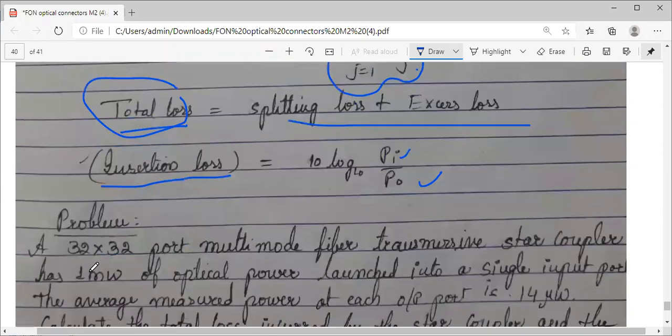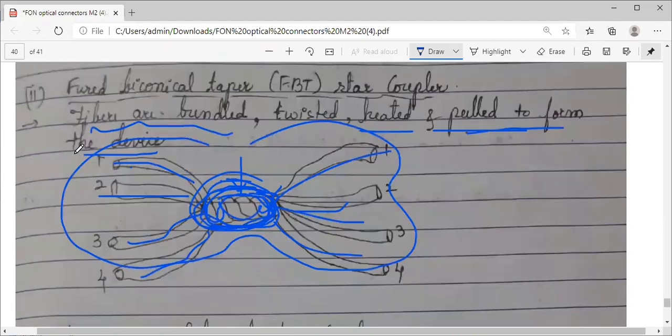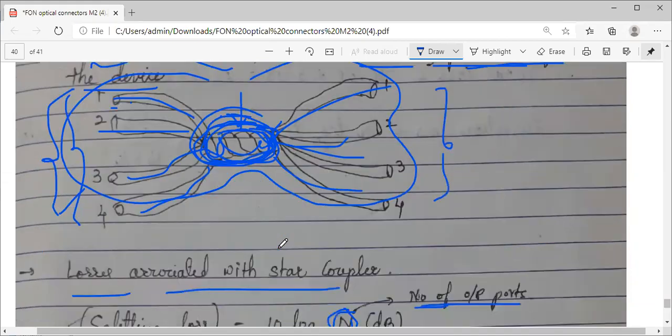Coming to one simple problem based on this: a 32x32 star coupler. Imagine 32 fibers are bunched, twisted, heated, and pulled. Input lines will be 32 ends, output side also 32 end faces of the fibers.